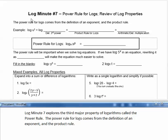Our new log minute 7 explores the third major property of logarithms called the power rule. The power rule for logs comes from the definition of an exponent and from the product rule for logs.